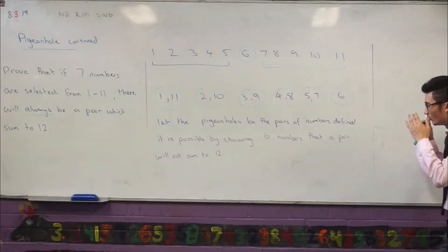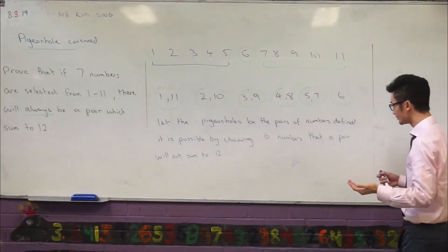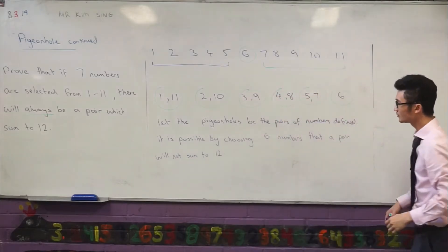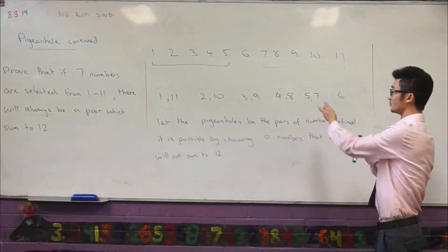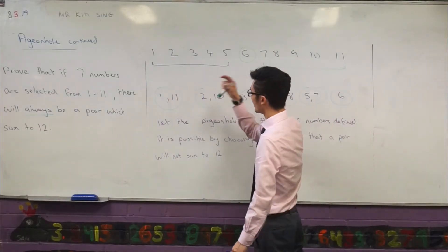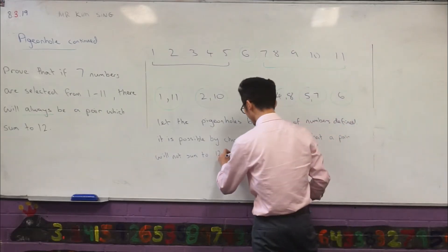And now I'm stating why choosing 6 numbers is not enough, because it's possible by choosing any 6 numbers that a pair will not sum to 12. For example, if I choose 1 from each of these pigeonholes, I wouldn't get a pair that sum to 12. But any additional one after that means that I have to have at least one of them being a pair, and that's how I can finish them off.